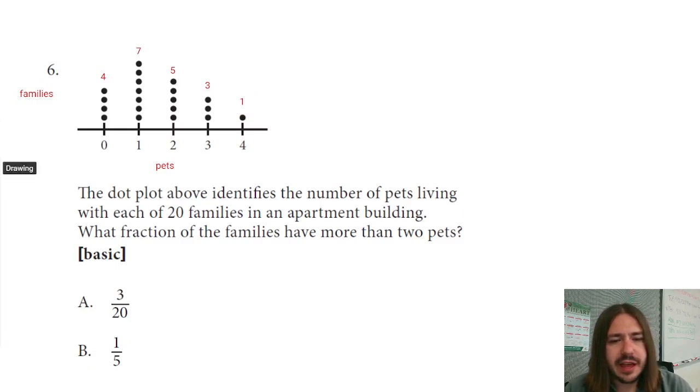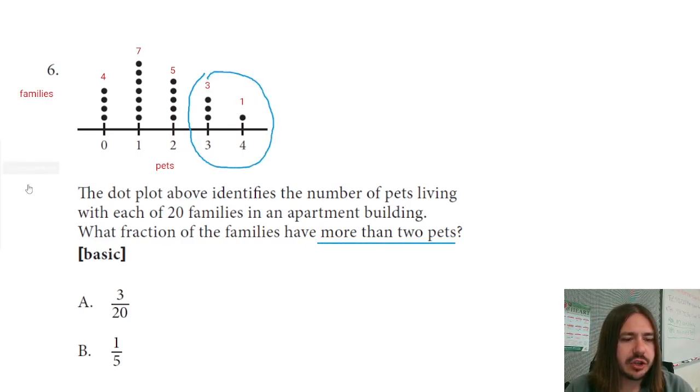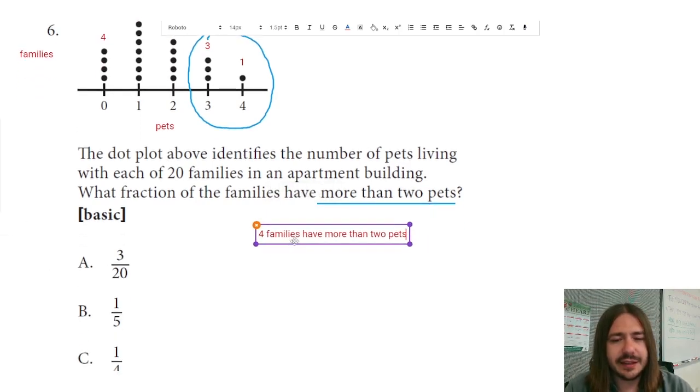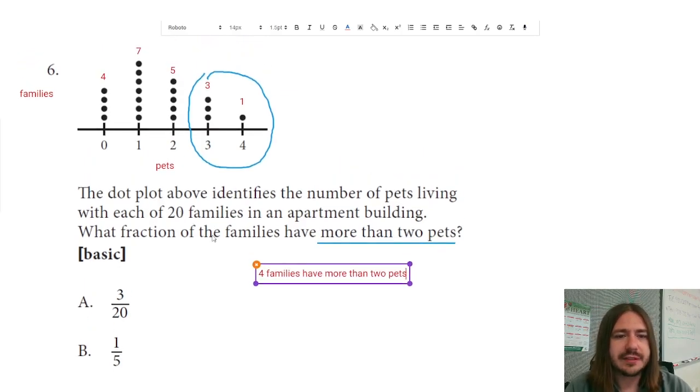So it says how many of the families have more than two pets? So really, we're just looking at three and four here. Now we can see there's a total of four families that have more than two pets. Let me make a note of that. This is not asking exactly how many families have more than two pets. It's saying what fraction of all the families. So we need to also count how many total families we're actually looking at here.